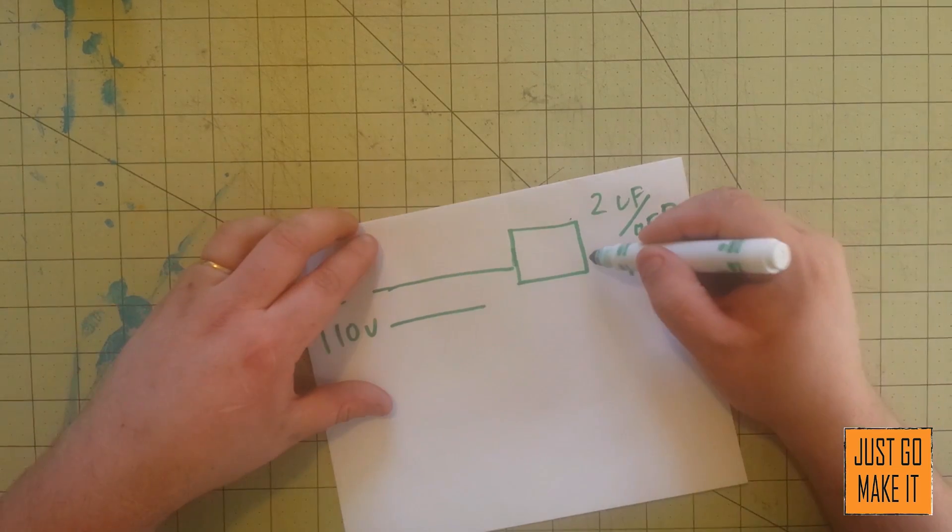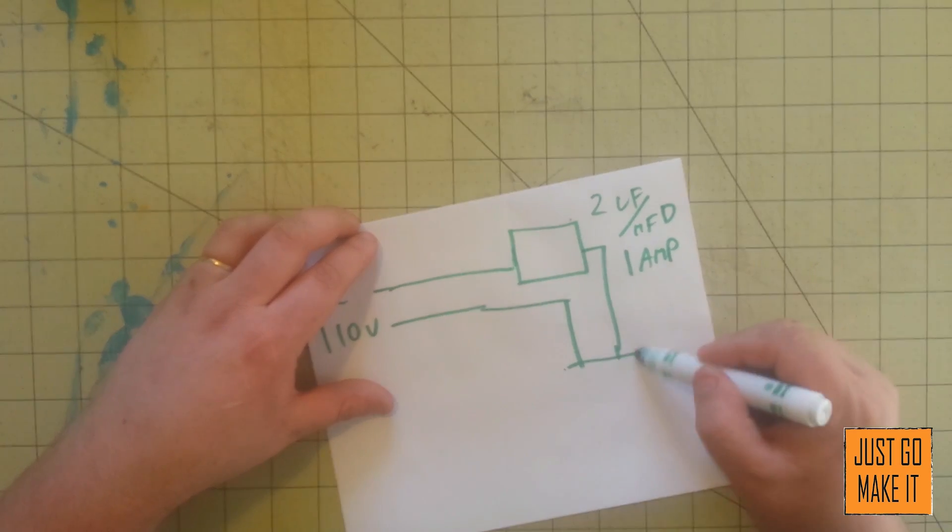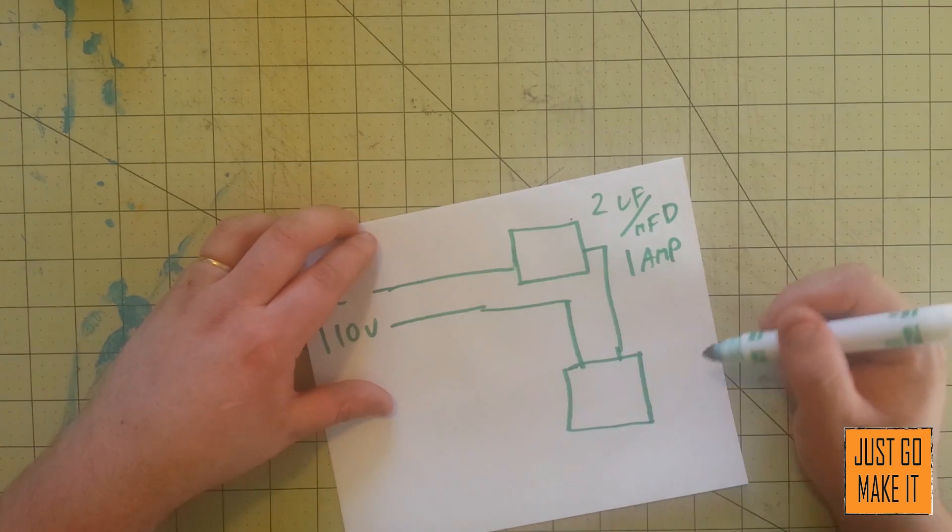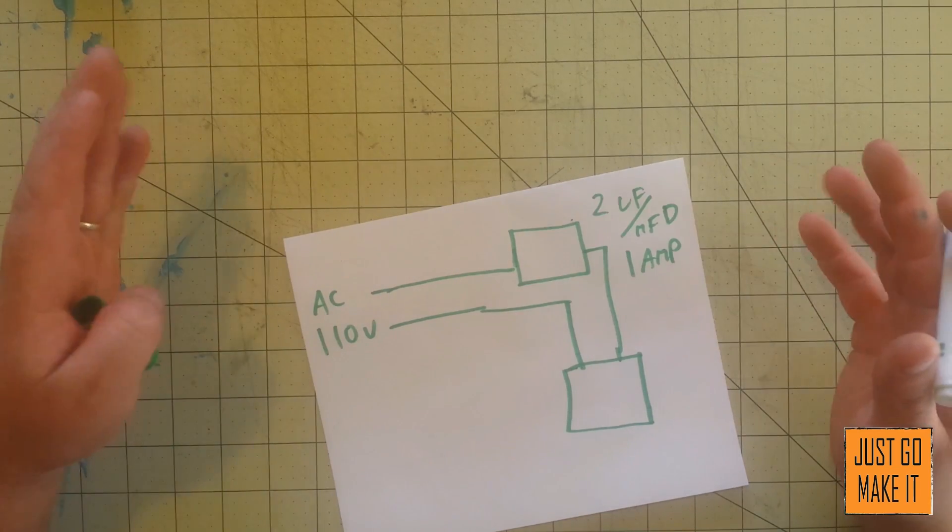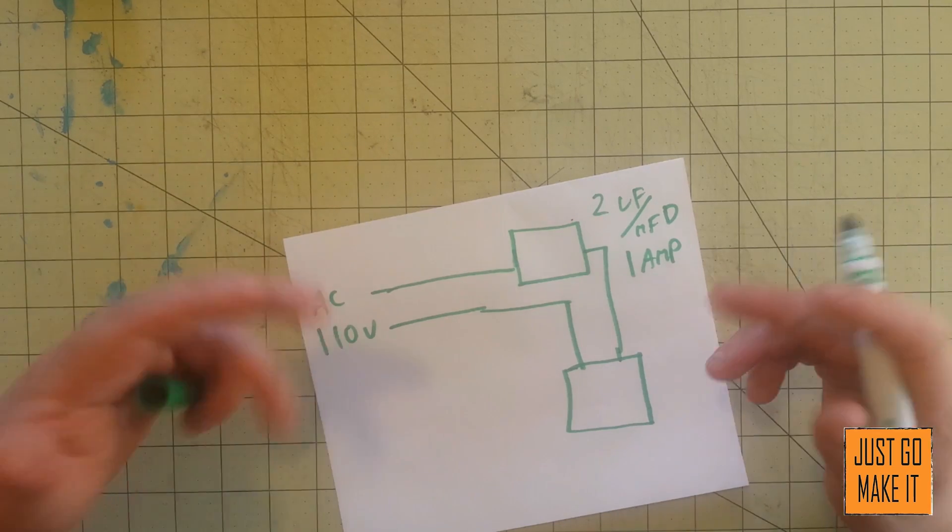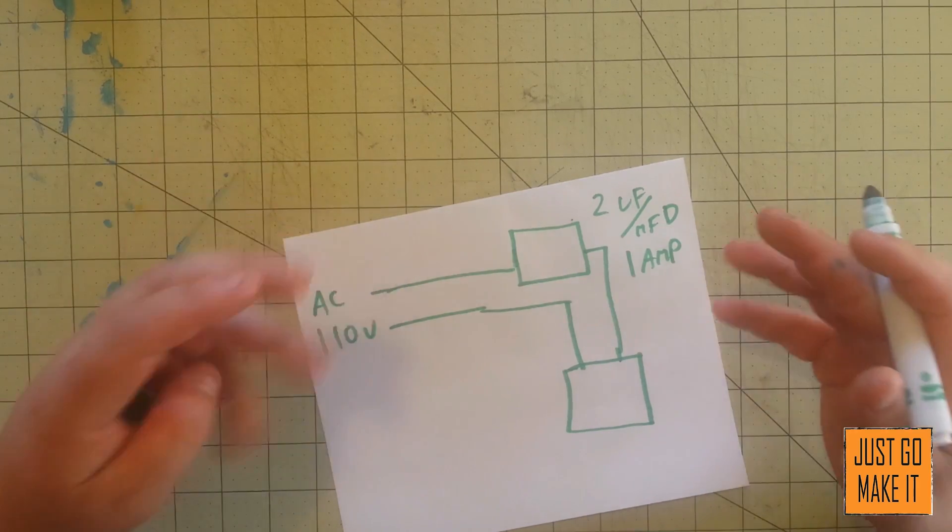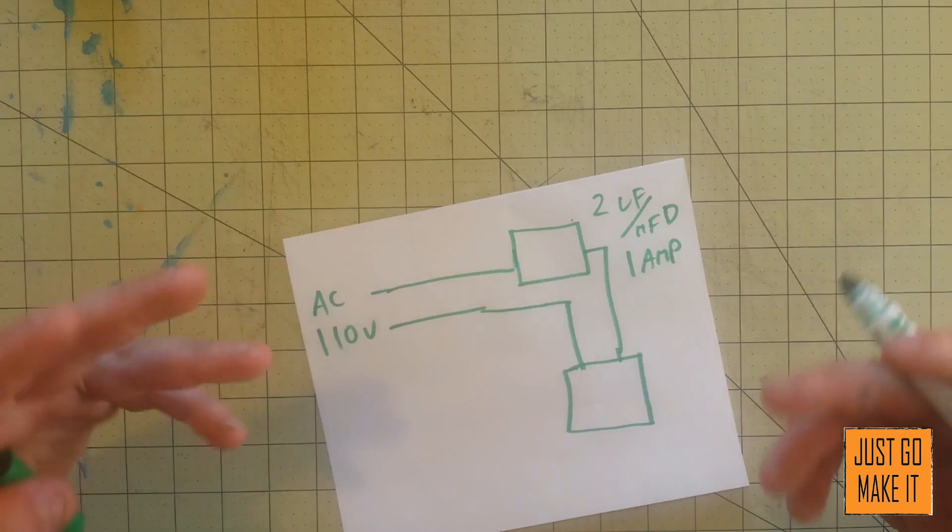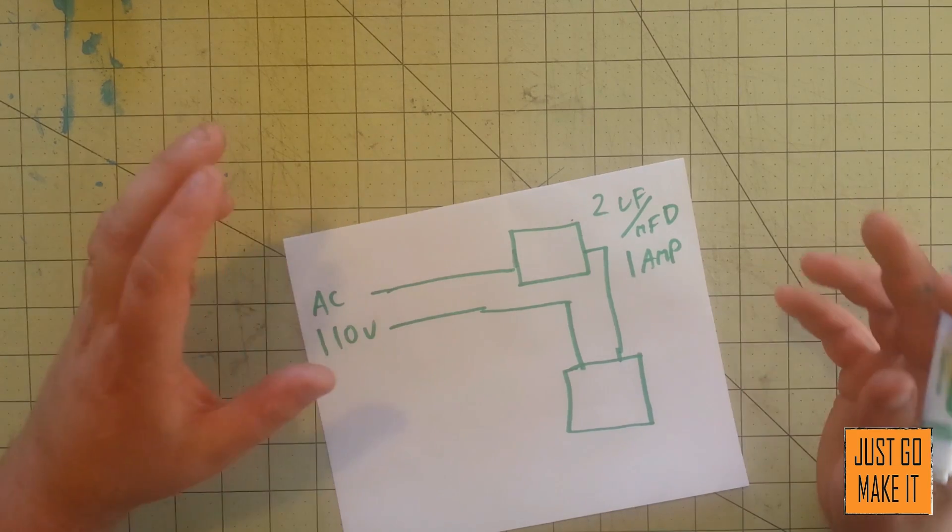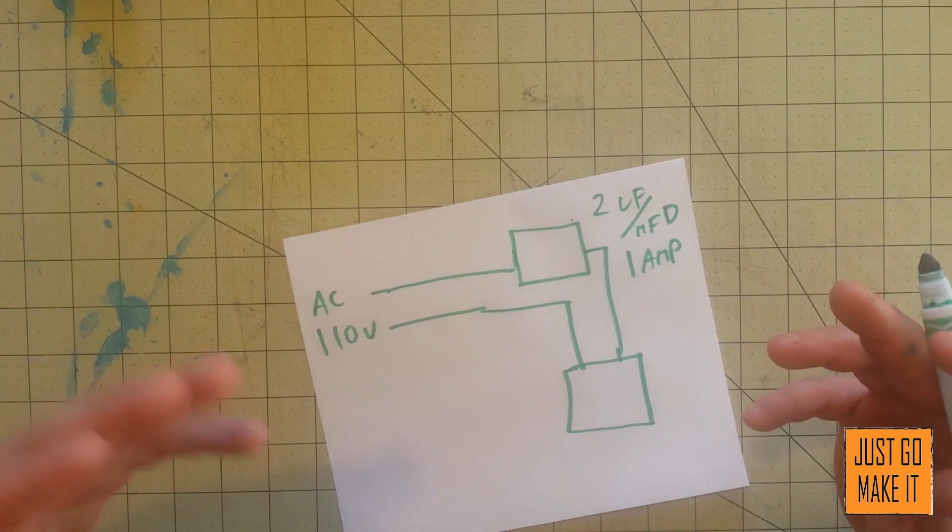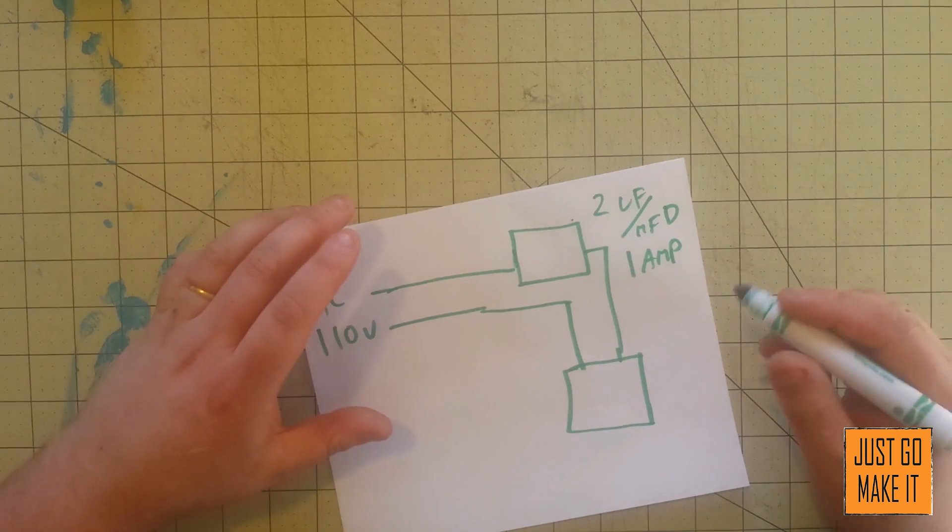Then from that, out of your capacitor, your AC voltage will go into a bridge rectifier. A bridge rectifier is basically just four diodes, which let electricity flow in one direction only. So that turns your AC current, or alternating current, into DC current, or direct current. You can buy a bridge rectifier or make one out of four diodes. Either way, it will work.